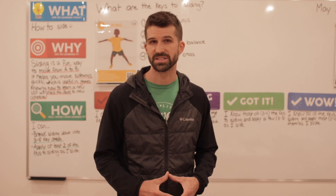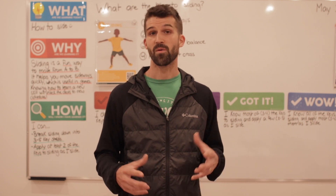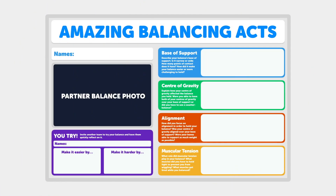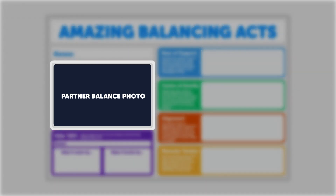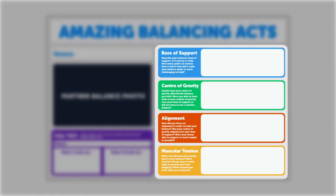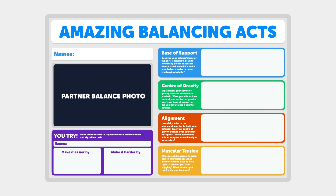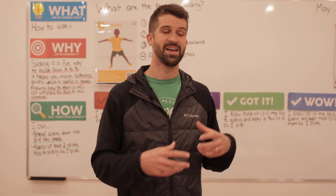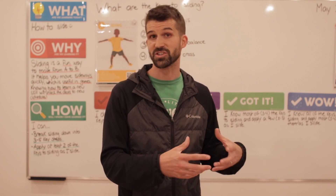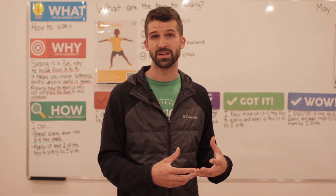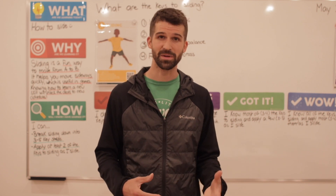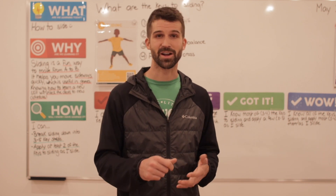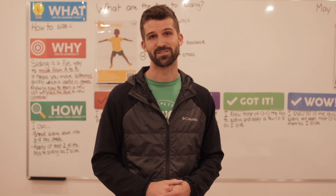As I was putting together all the different assessment tools for the unit, I wanted to design a sheet called the Amazing Balancing Act sheet. What I wanted on the sheet was, in one area, a photo of a partner balance being performed, and then in another area, a space where students could break down that balance based on the four concepts explored in class. I realized it would be so much more fun to have a photo of the students themselves performing that balance, rather than just an image pulled from the internet, so they could mark it up and analyze it using the rest of the form.